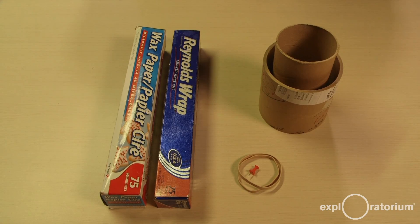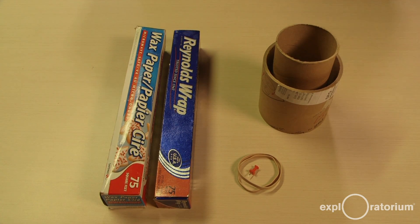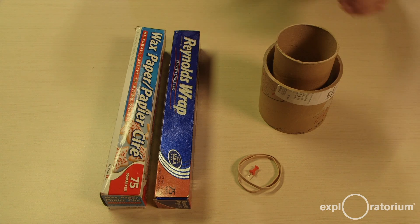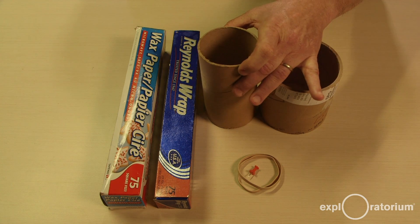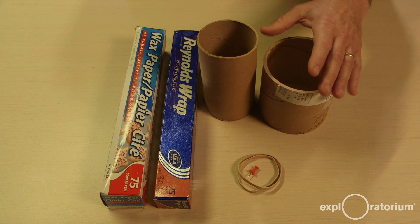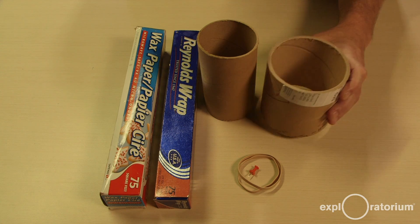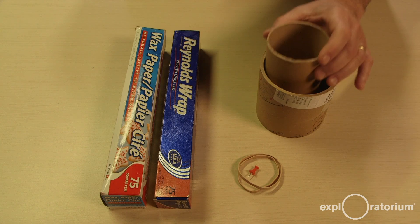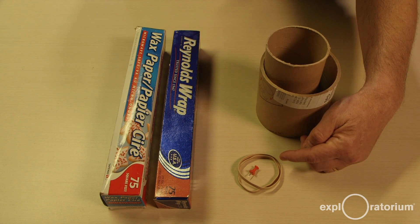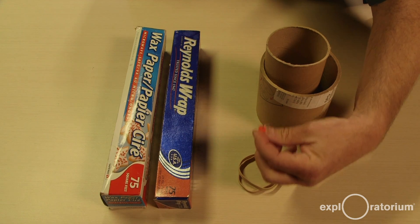In order to build your pinhole viewer, you're going to need the following materials. You're going to need some wax paper, aluminum foil, cardboard tubes, and you can use toilet paper tube inserts or paper towel inserts, but I prefer to use packaging tubes. What I do is I take these rugged tubes and I cut them down using a hacksaw. They work great. You also definitely need some rubber bands, and most importantly, a pin to make your pinholes.